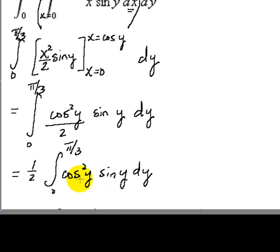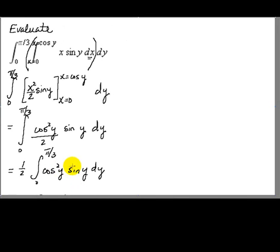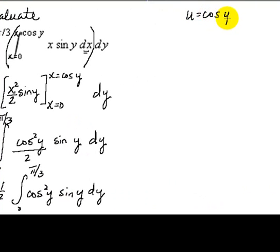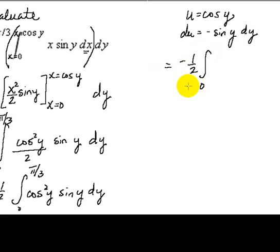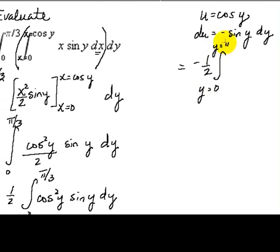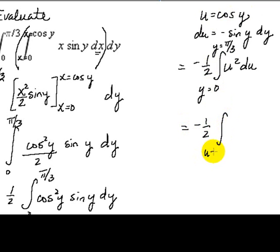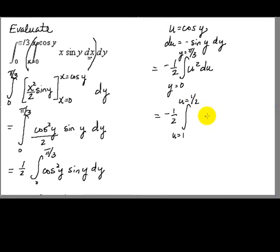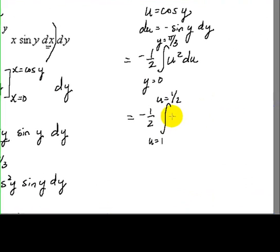Here we can use a u-substitution, letting u equal cosine of y, so du equals negative sine of y dy. Making our substitution, we have negative one half times the integral. Keeping in mind the bounds are y equals zero to y equals pi over three, we can convert to u values: when y is zero, u equals cosine of zero which is one; when y is pi over three, u equals cosine of pi over three which is one half. So this becomes negative one half times the integral from one to one half of u squared du.